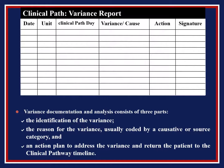This is an example of a variance report. Variance documentation and analysis consists of three parts: the identification of the variance, the reason for the variance — usually coded by a causative or source category — and an action plan to address the variance and return the patient to the clinical pathway timeline.